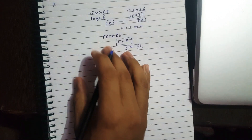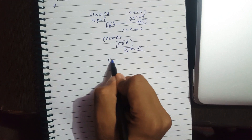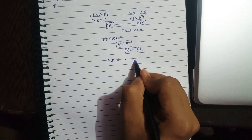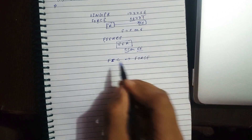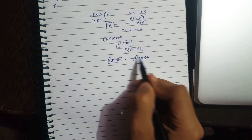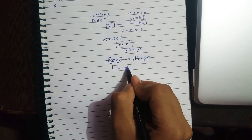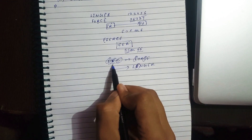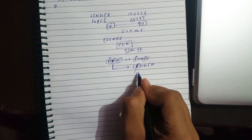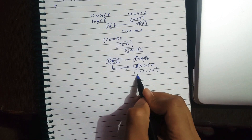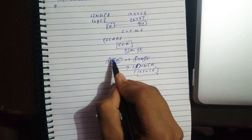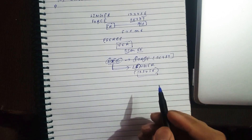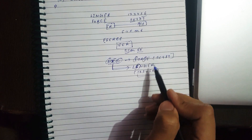We are now left with options A, B, and D. The remaining letters to assign are F, I, and C. Force contains F and C but not I, while linger contains I. This means F, I, C include one digit from linger (1–6) and two digits from force (5–9).